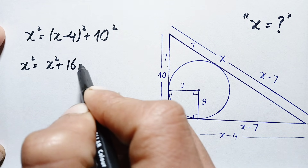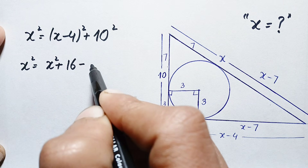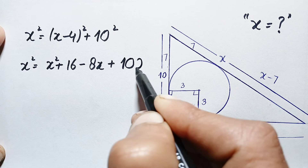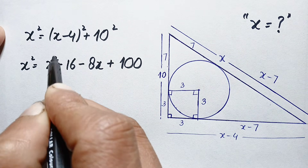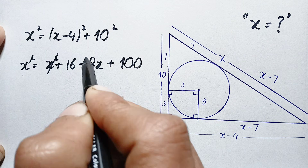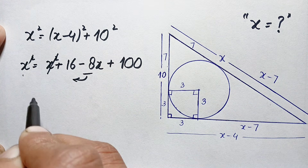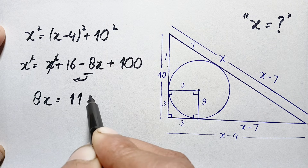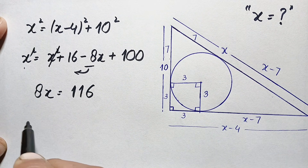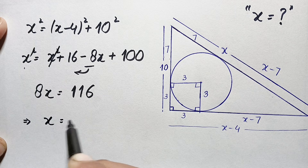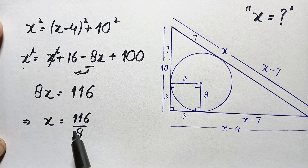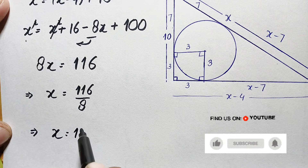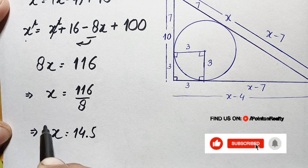Expanding using the identity (a minus b) squared: (x minus 4) squared equals x squared minus 8x plus 16, and 10 squared is 100. Since x squared appears on both sides, we cancel it. Taking the negative 8x term to the left gives 8x equals 16 plus 100, which is 116. Dividing both sides by 8, x equals 116 divided by 8, which simplifies to 14.5. That is our final answer.